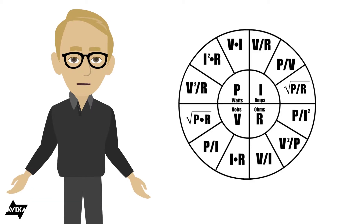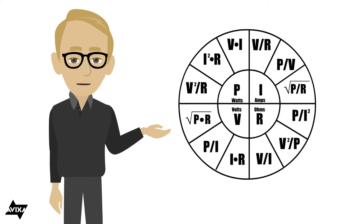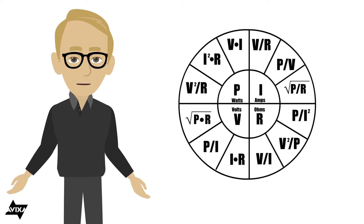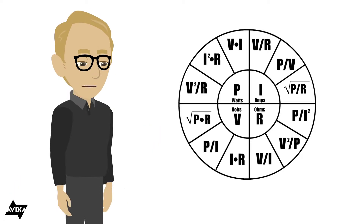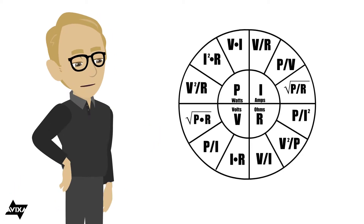This is the formula wheel that we use to solve for electrical equations involving power, current, resistance, and voltage. The symbols we're going to see for this: P for power, I for current, R for resistance, and V for voltage.